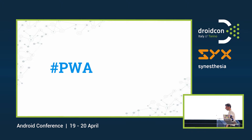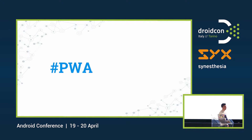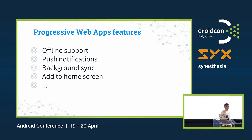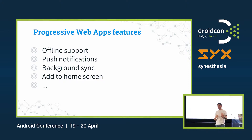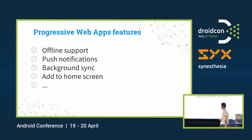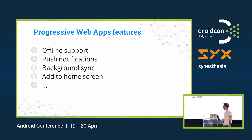First of all, we have offline support, which also means instant loading in some cases in our web app. We have push notifications, so we are able in our web app to intercept notifications and display the payload to the user. We have background sync, which means I can do some action when I'm offline and finish that action when I go back online. And last but not least, I have the opportunity to add my app icon to my home screen — and there are more and more features coming under the umbrella of progressive apps.